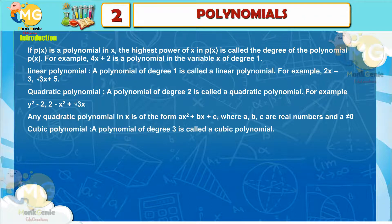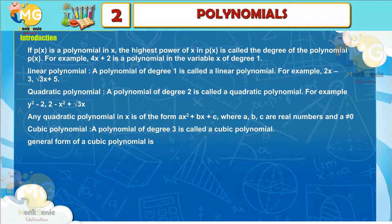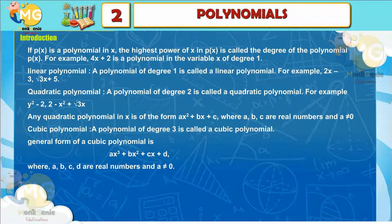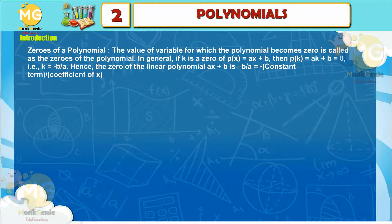A polynomial of degree 3 is called a cubic polynomial. The general form of a cubic polynomial is ax³ + bx² + cx + d, where a, b, c, d are real numbers and a ≠ 0.